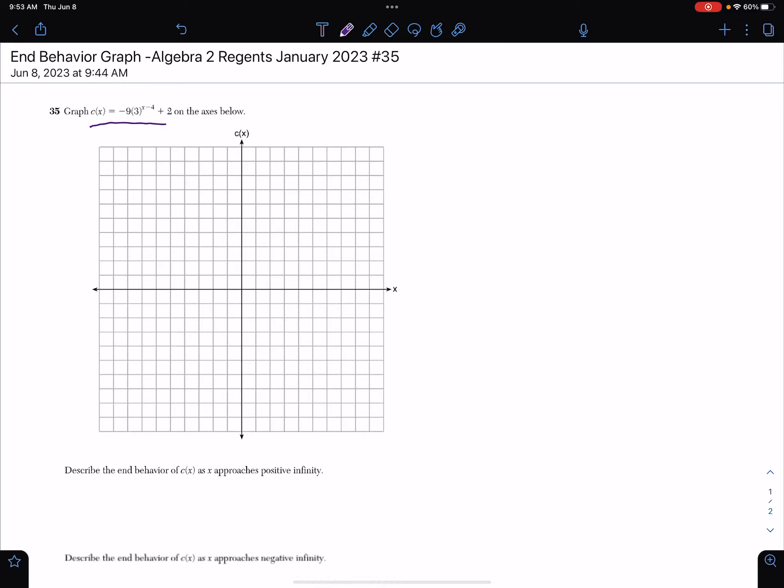Graph c as a function of x equals this equation. And it tells us that eventually we have to describe the end behavior of c as a function of x as x approaches positive infinity, and describe the end behavior of c as a function of x as x approaches negative infinity.